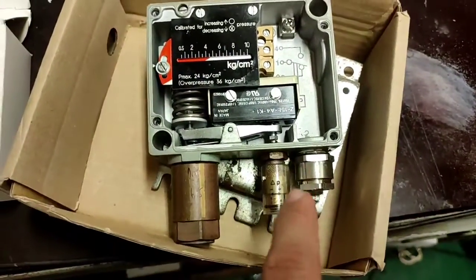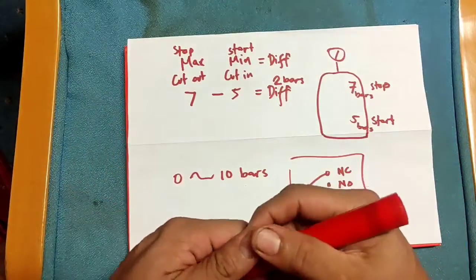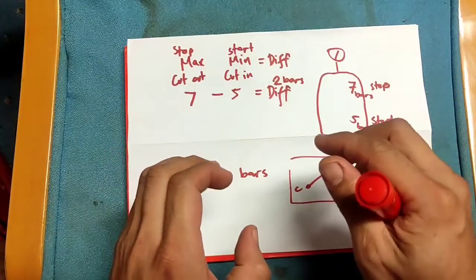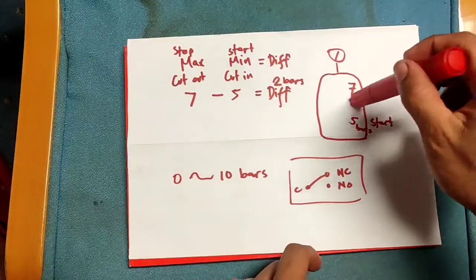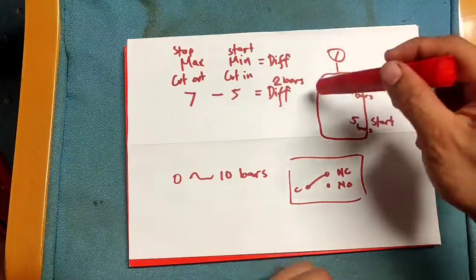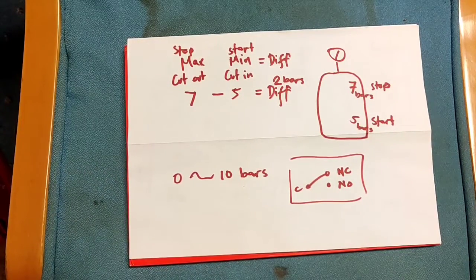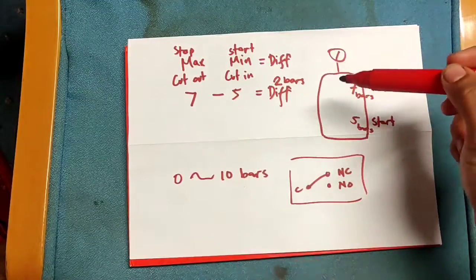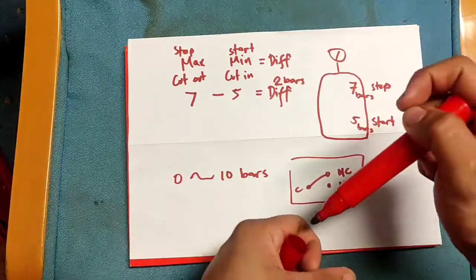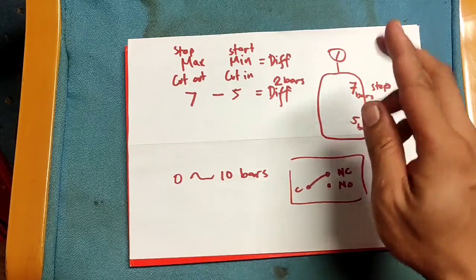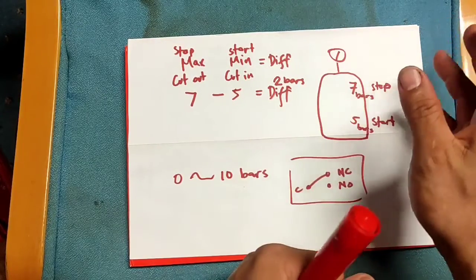It is very important to know how to set the pressure differential switches. This is very commonly used on our vessel — for example, for air tanks, service air tanks, or main starting air bottles. If your system uses only one pressure switch, that one switch handles both the cut-in and cut-out functions using the differential setting.